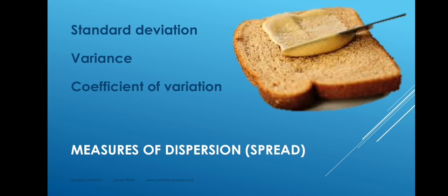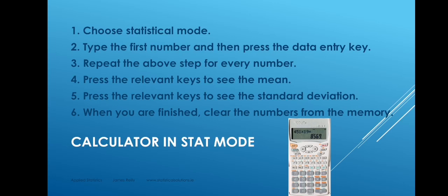We can also express the standard deviation as a percentage of the mean by dividing the standard deviation by the mean — this is called the coefficient of variation, or the relative standard deviation. But when all is said and done, the standard deviation is perhaps the best measure of dispersion, and it is a concept we want to become familiar with. To calculate the mean and standard deviation, it is highly recommended to use your calculator in stat mode rather than doing it by hand.